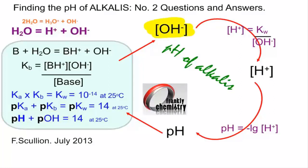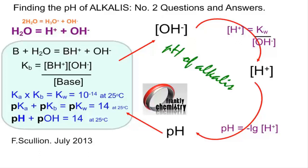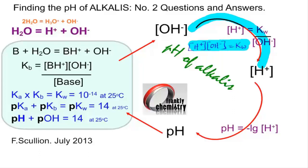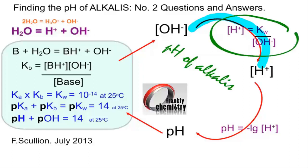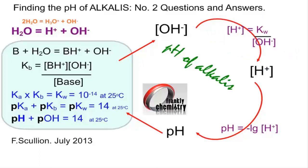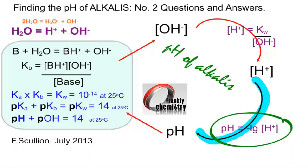Obtaining the concentration of hydroxide ions depends on whether you're dealing with a strong or weak base. If it's a strong base, the concentration of hydroxide ions can be obtained directly from the concentration of the base, since it fully dissociates. With a weak base, you need the base dissociation constant Kb. Once you have the hydroxide ion concentration, you can get the hydrogen ion concentration using the rearranged ionic product expression: [H⁺] = Kw / [OH⁻]. Then pH is the negative log of the hydrogen ion concentration.